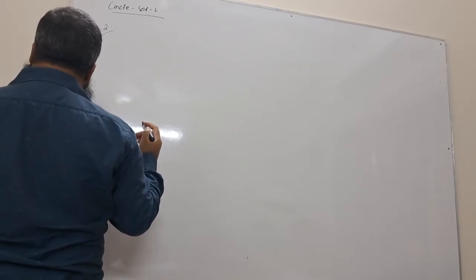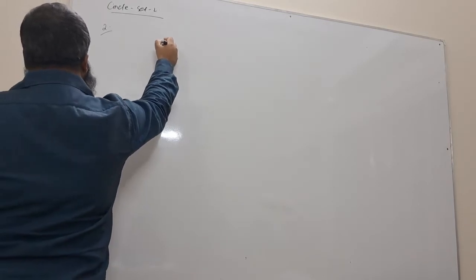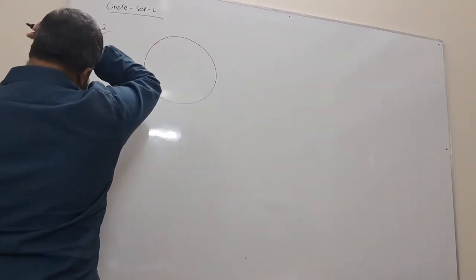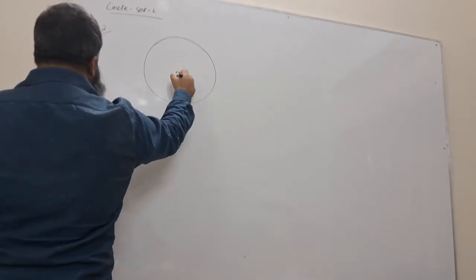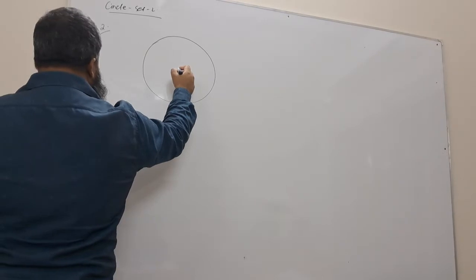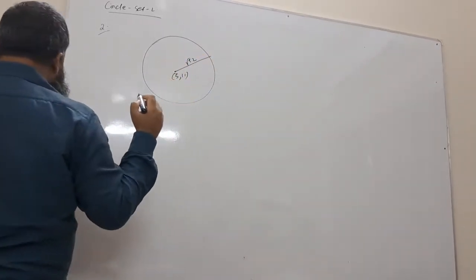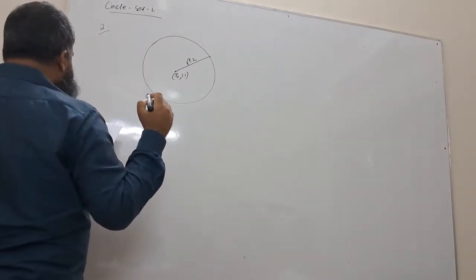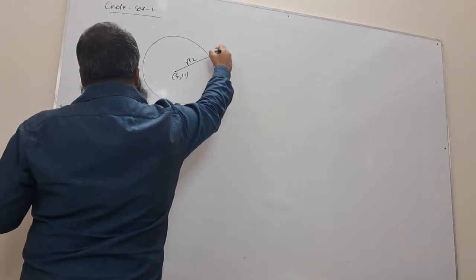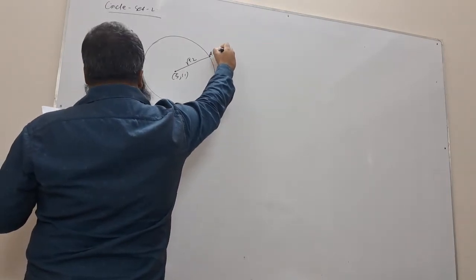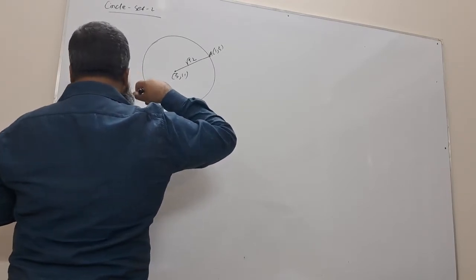The circle has center 5, 11 and radius root 52 so that L is a tangent to the circle. The circle center is 5, 11 and radius root 52. It passes through A.